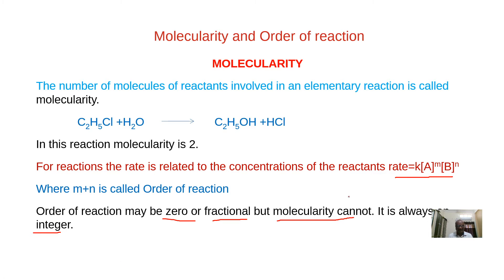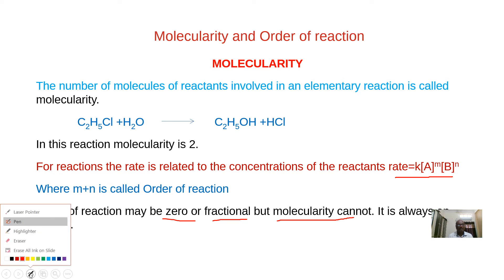The order of reaction is determined experimentally by studying the change in rate with change in concentration of reactants. The molecularity is determined from the reaction mechanism. Each elementary step in the mechanism has its own molecularity. Order can be zero, fractional, or integer, but molecularity cannot be zero or fractional.